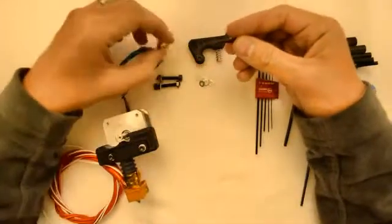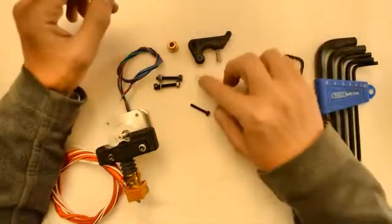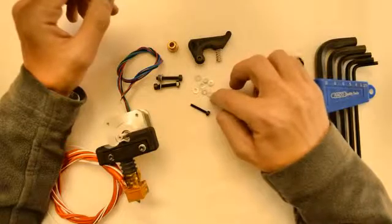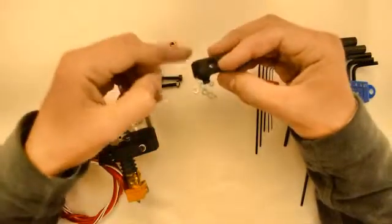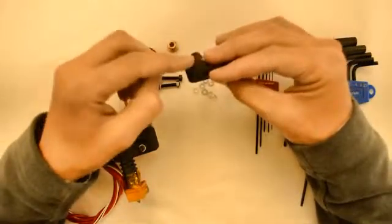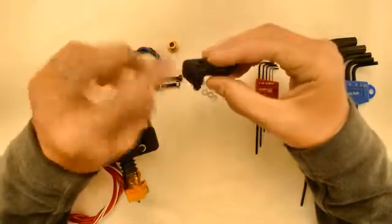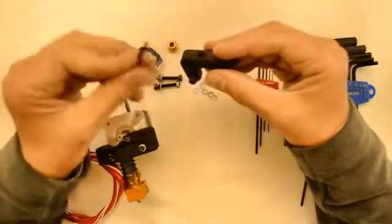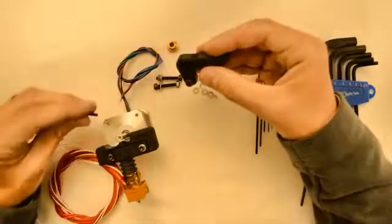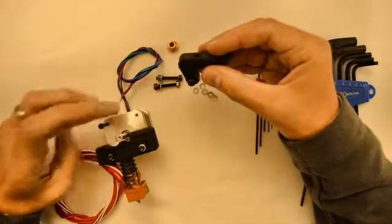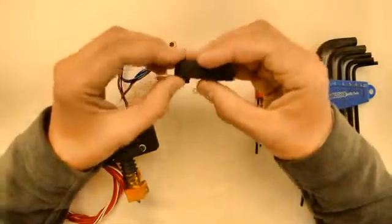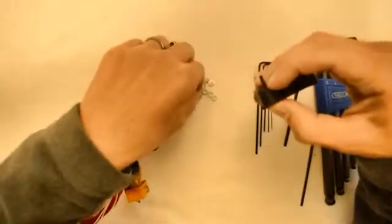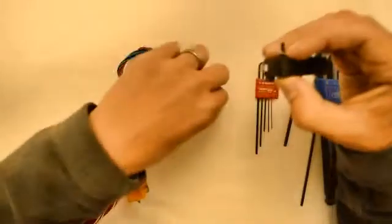For this we will use the last M3 screw and also some of the washers. Now you can play around with the amount of washers that you use here. You can put one on the top and 5 at the bottom, or 4 at the bottom. It doesn't matter. This is determined by the amount of thread that you have in your stepper motor. So in this case I will just use 5 M3 washers.